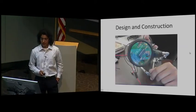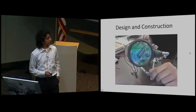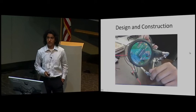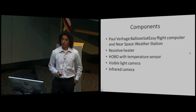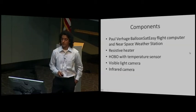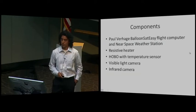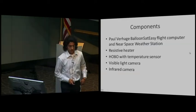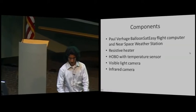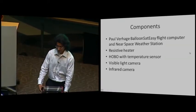This is a photo of the design and construction of the payload. Seen here is the flight computer. The components of the payload included a balloon set easy flight computer with a near-space weather station, a resistive heater, a Hobo weather temperature sensor, and two cameras for visible light and infrared. In fact, I have my payload right here, just so you can see it.